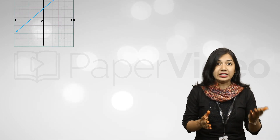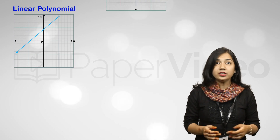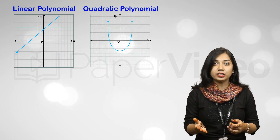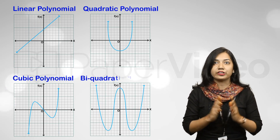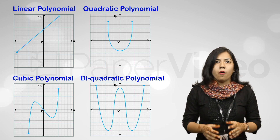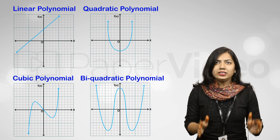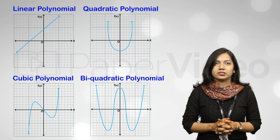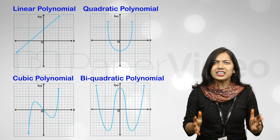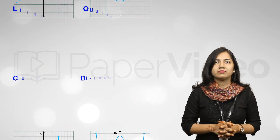We know that there are different types of polynomials based on their degrees — that is, linear polynomial, quadratic polynomial, cubic polynomial, and biquadratic polynomial. All these polynomials have different types of graphs. Let us understand them one by one.